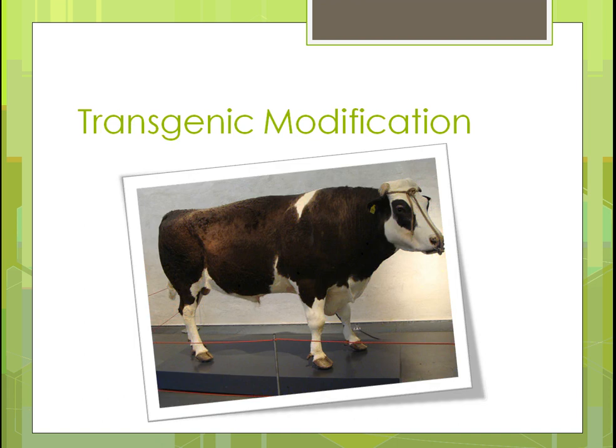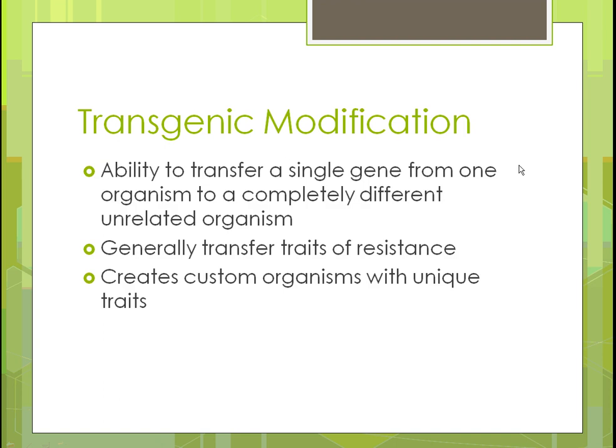Transgenic modification involves creating an animal not through natural insemination but through artificial insemination, taking just the genes you want to create a brand new animal — something very controversial. You take a single gene from one organism and place it into a completely unrelated one. One example is a facility in Philadelphia that's trying to create tilapia that grows in less time by taking a gene from a completely different animal and inserting it into the fish.